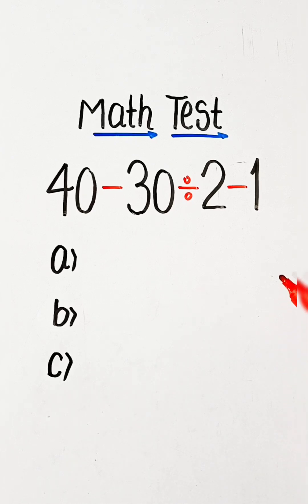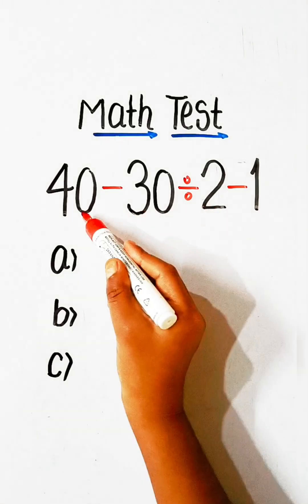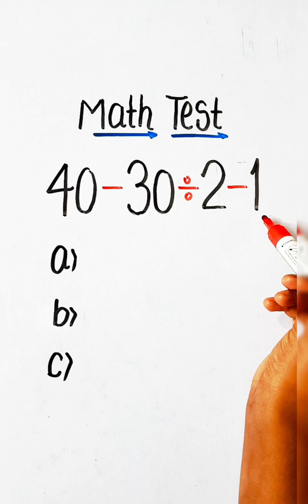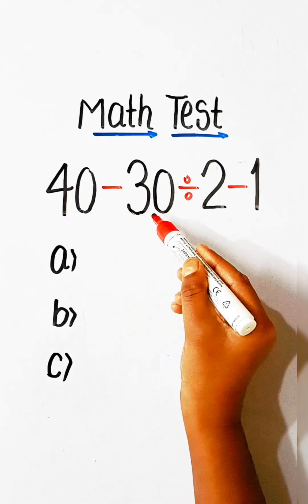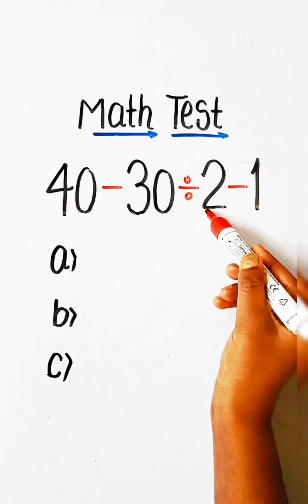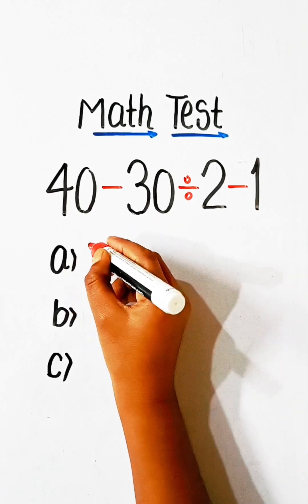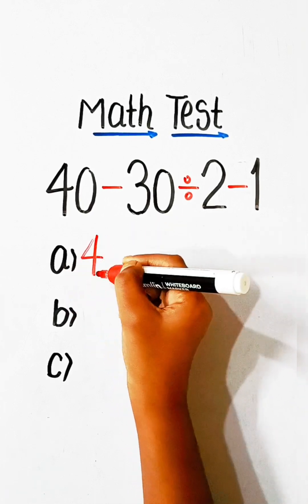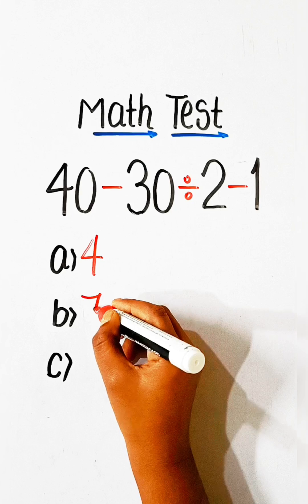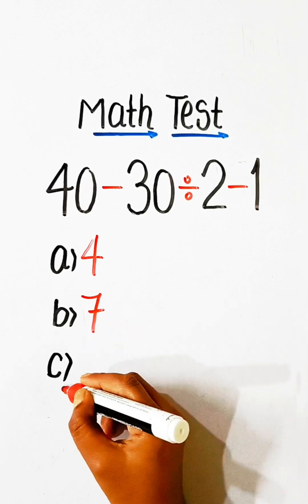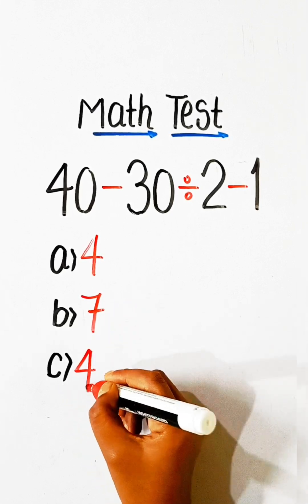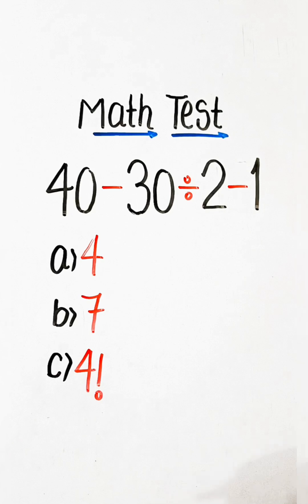Hello everyone, in this video we will solve this math expression: 40 - 30 ÷ 2 - 1 equals what? Option A: 4, Option B: 7, Option C: 4 factorial. Comment your answer, then we will solve this.